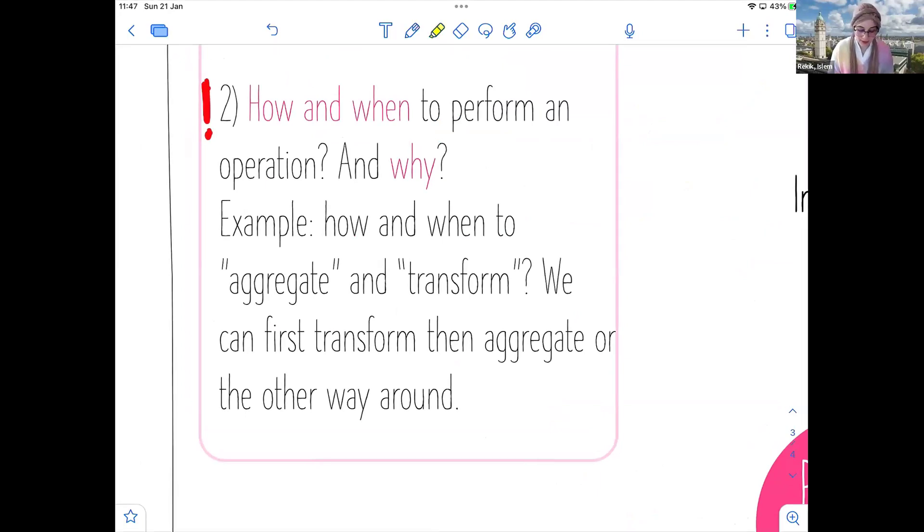For example, there are several GNN papers that use that aggregate and transform in a completely different order. How and when to aggregate and transform? These are very important questions, and they will completely shift your narrative and your results. For example, so far, we have aggregated first and then transform. But what you can also do, you can transform first, and then aggregate the features.